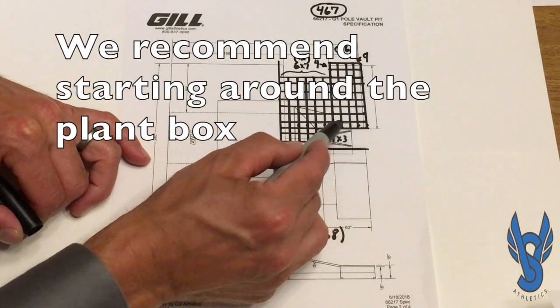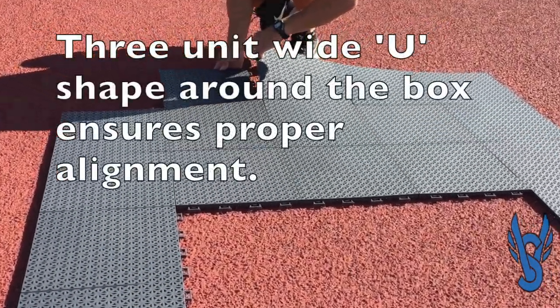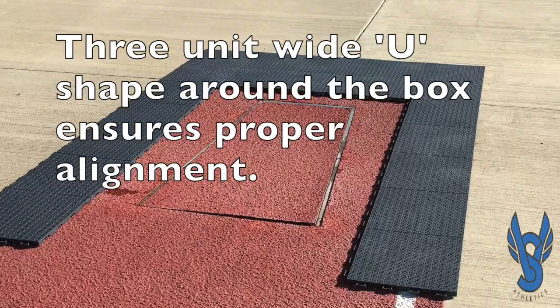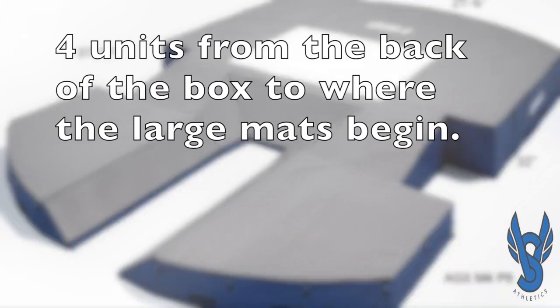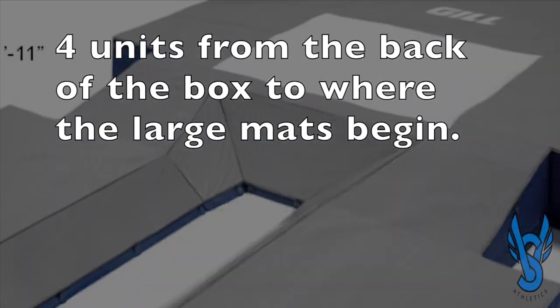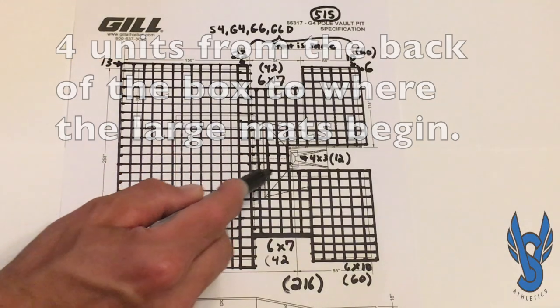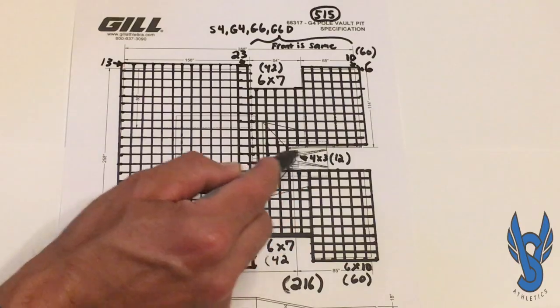To ensure proper assembly we recommend assembly begin around the plant box with a three unit wide U shape. Know that regardless of the size landing system you purchase, there are four rows from the back of the plant box to the start of where the large mats will be resting.